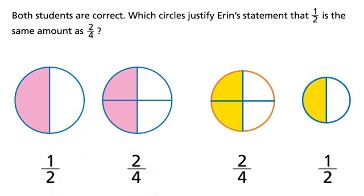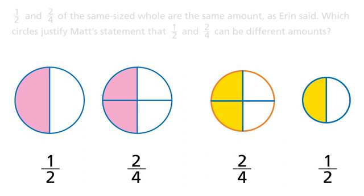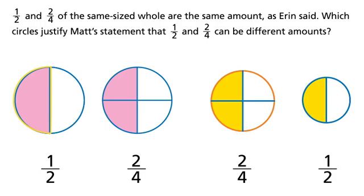Both students are correct. Which circles justify Aaron's statement that one-half is the same amount as two-fourths? One-half and two-fourths of the same size whole are the same amount, as Aaron said.